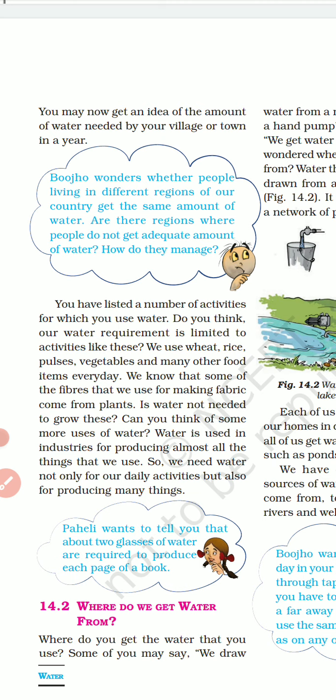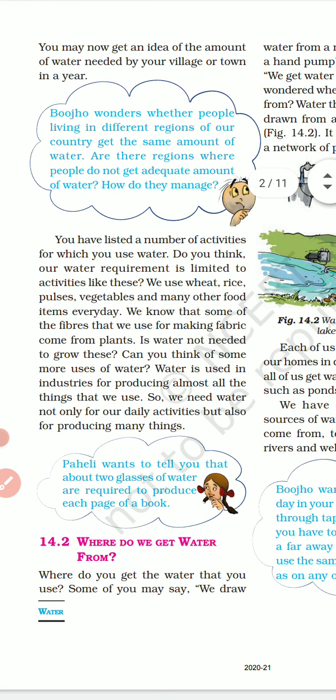Bojo wonders whether people living in different regions of our country get the same amount of water. Are there regions where people do not get adequate water? How do they manage? Yes, people living in different regions get different amounts of water - some get water for 24 hours, some for 12 hours, some for even 8 hours.